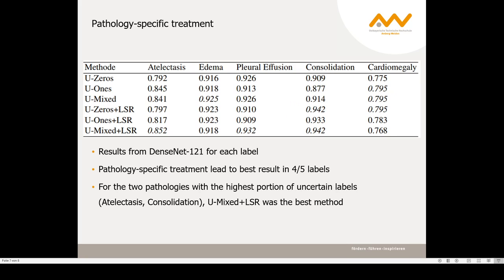The results from the DenseNet-121 for each label moreover show that the pathology-specific treatment led to the best result in four out of five labels. For the two pathologies with the highest portion of uncertain labels, which are atelectasis and consolidation, the UMix plus LSR approach was the best method.